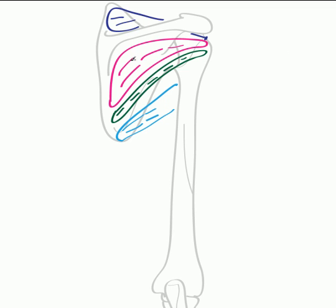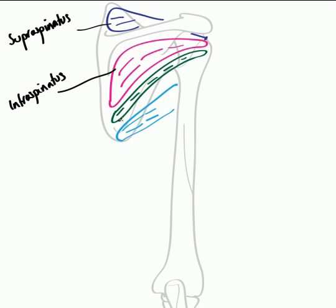Let's quickly go over these muscles once more. We have supraspinatus, which is important in initiating abduction of the glenohumeral joint. We have infraspinatus, inferior to the spine. Inferior to infraspinatus we have teres minor. Infraspinatus and teres minor are associated with laterally rotating the humerus. And then inferior to teres minor we have teres major, which is associated with medial rotation of the humerus. Remember, teres major does not form part of the rotator cuff.